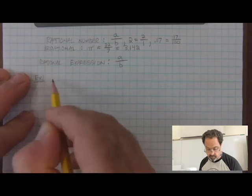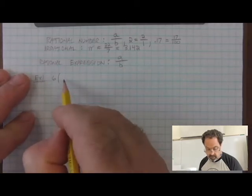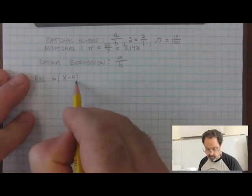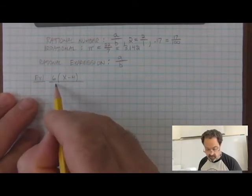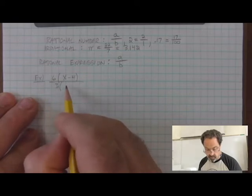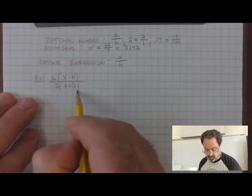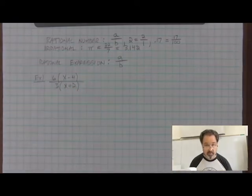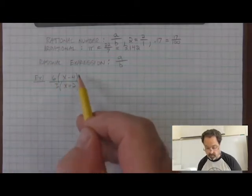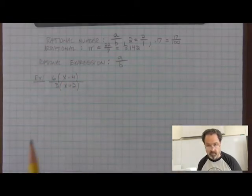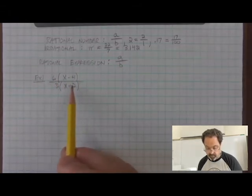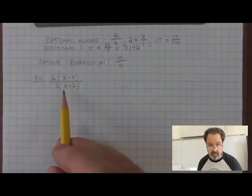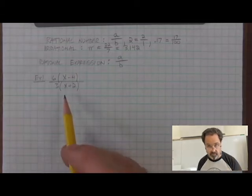For example, this expression, it's not an equation because there's no equal sign here. Six times x minus four divided by three times x plus two is a rational expression because the structure of the algebra and the numbers is a fraction. We have an algebraic expression divided by another algebraic expression. We call this a rational expression.